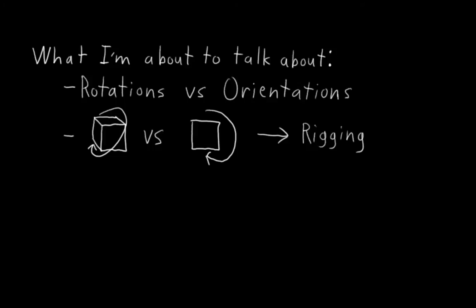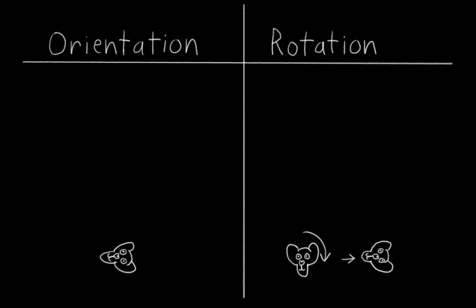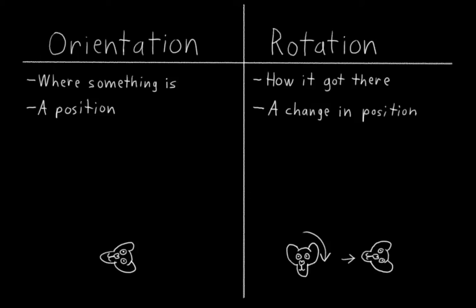So let's start with the difference between rotation and orientation. In short, orientation is where something is, and rotation is how it got there. Or in other words, orientation is a position, and rotation is a change in position. Hopefully that's fairly intuitive right off the bat, but I'm going to give some examples to help illustrate.